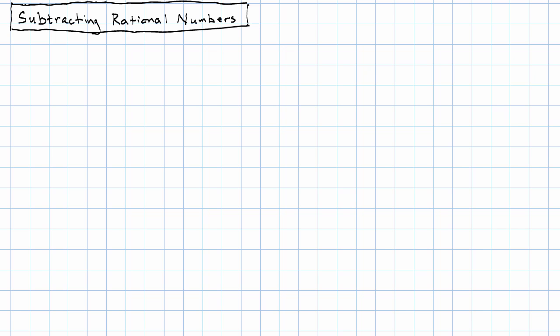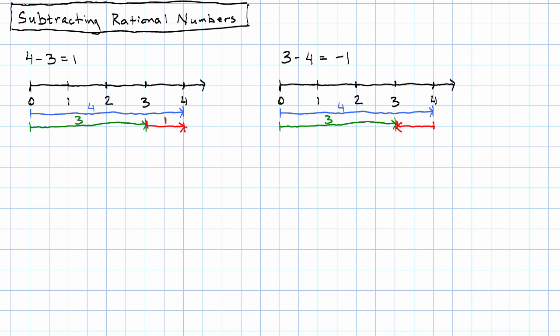We can get 4 minus 3 is positive 1, drawing the result starting from the end of 3 and going to the end of 4. But we can also get 3 minus 4 is negative 1, starting from 4 and going back to 3.